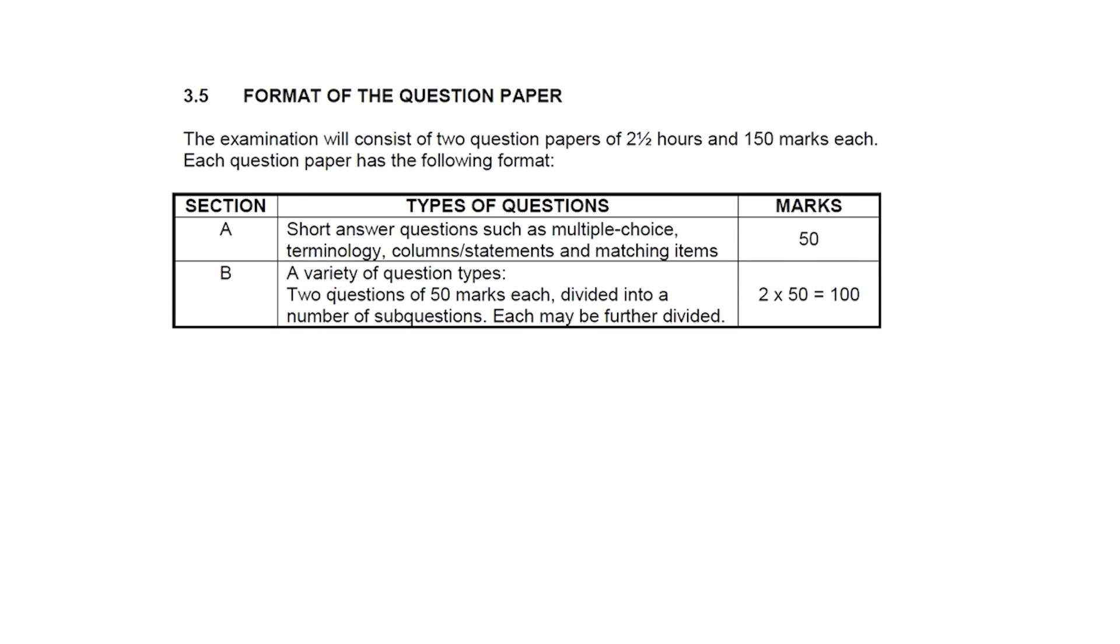We then get Section B, which is a variety of different question types. There are two questions, 50 marks each—question 2 and question 3. There's divided into a number of sub questions, so you will have question 2 and question 3, each one will be divided into a number of sub questions such as 2.1, 2.2, 3.1, 3.2, each being a section in the paper.